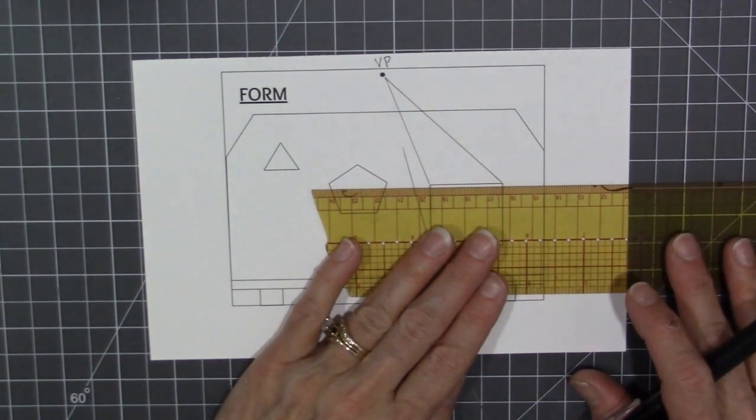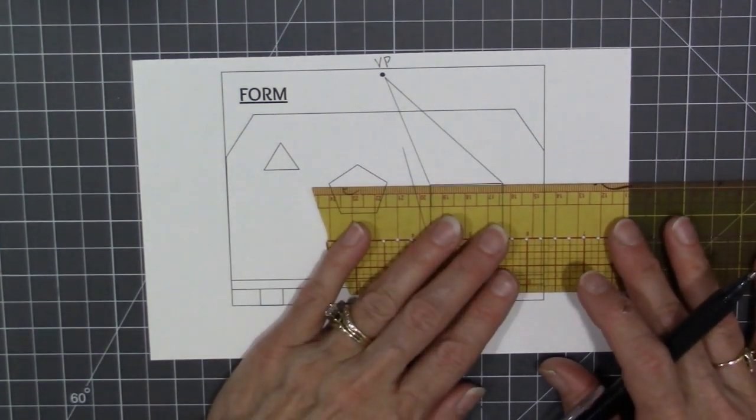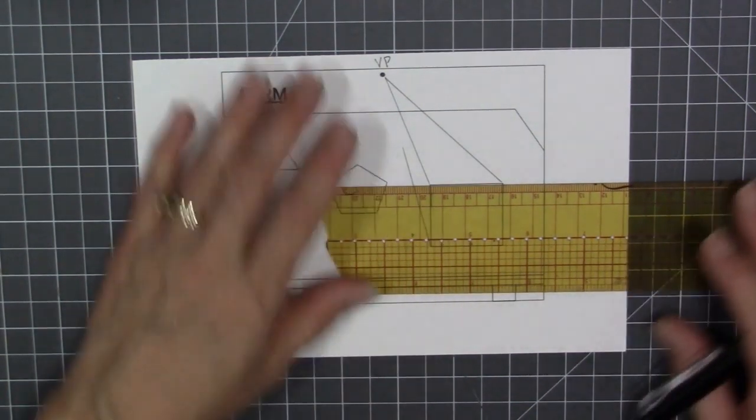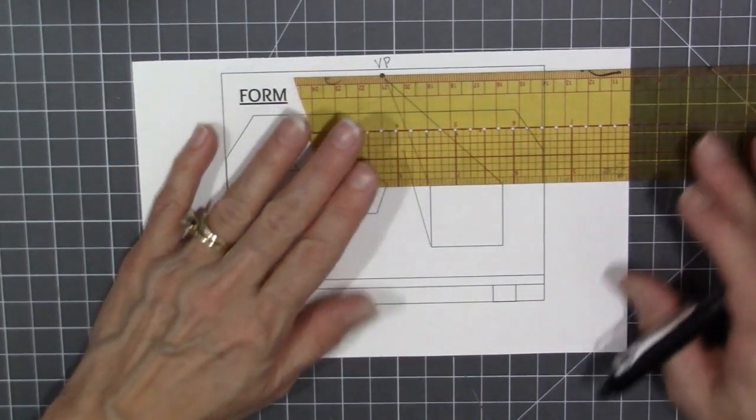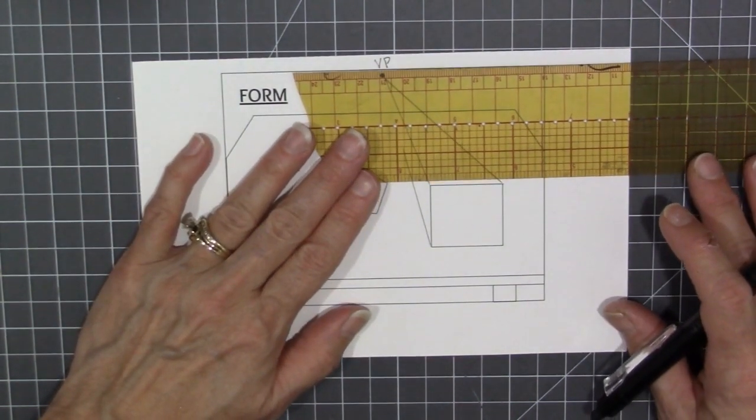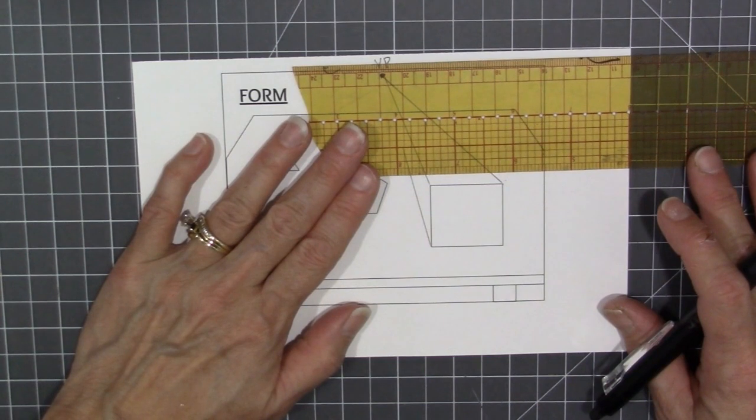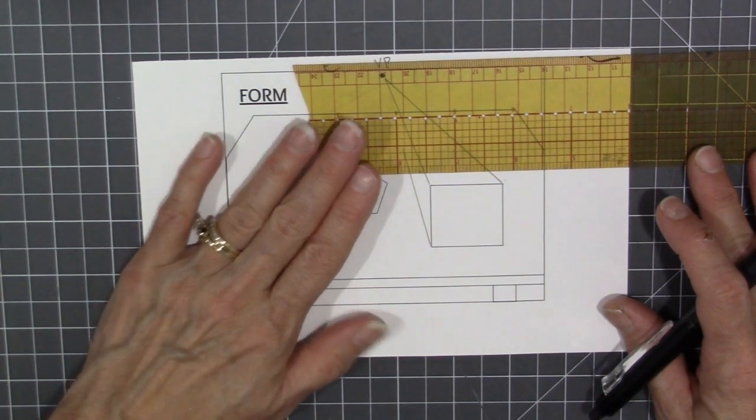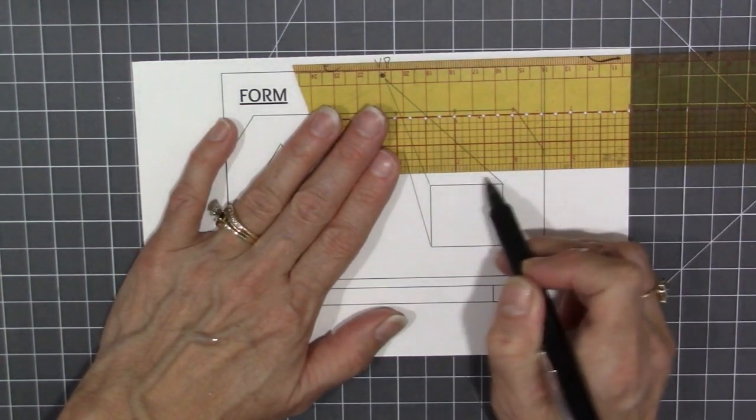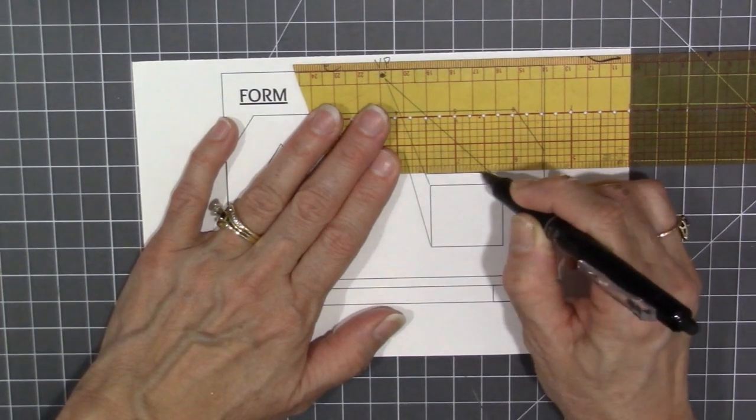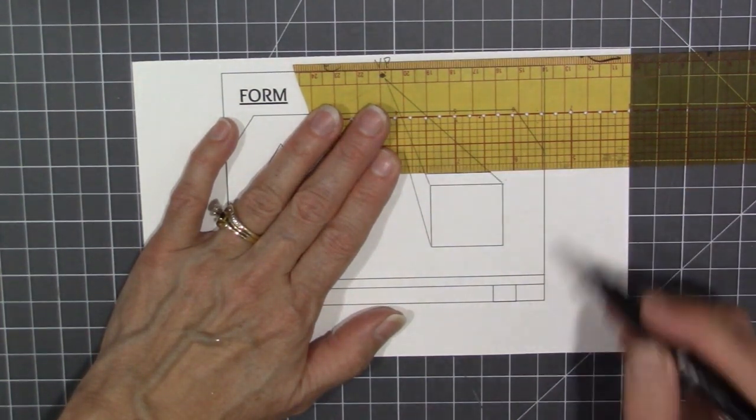Once you have the front edge done, you're going to use your ruler on each edge and drag it back away without making it change angles to create a parallel back edge between vanishing lines to the edge in front.